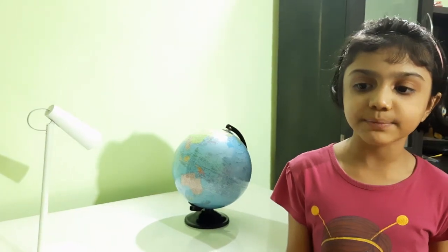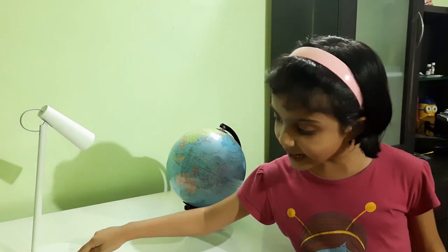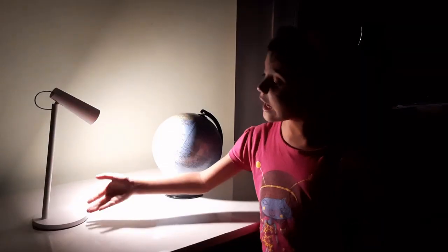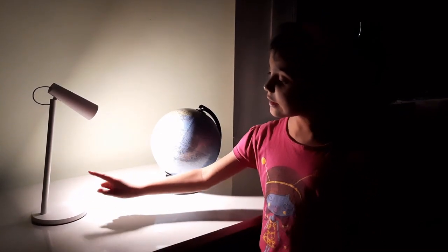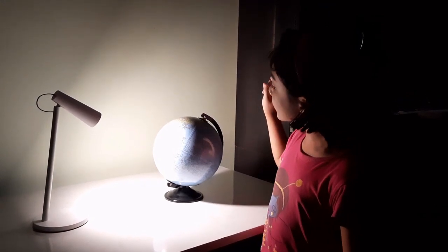For this experiment I will use a globe, a lamp, and a dark room. Switch off the lights. I have already switched on the lamp which will act like the sun, and the globe which will act like the earth.